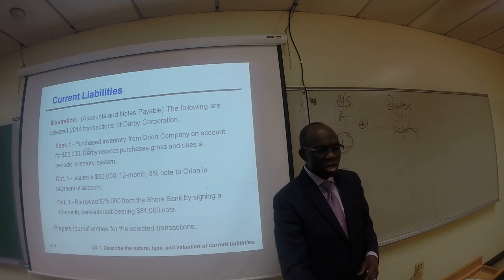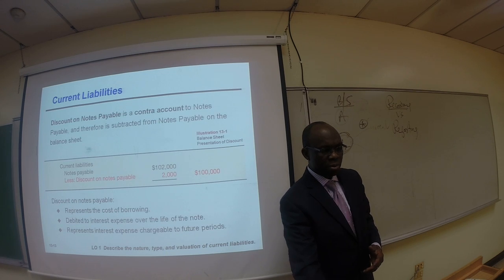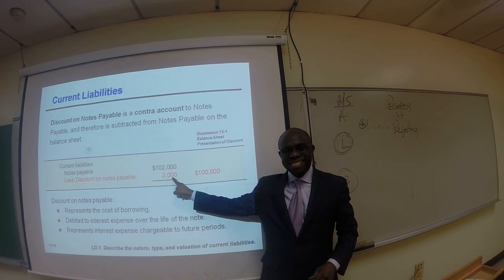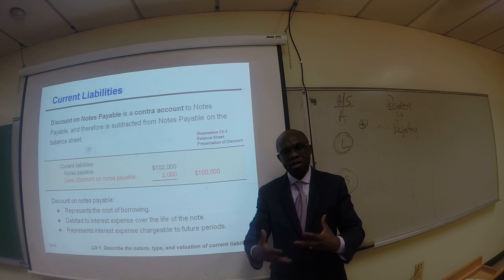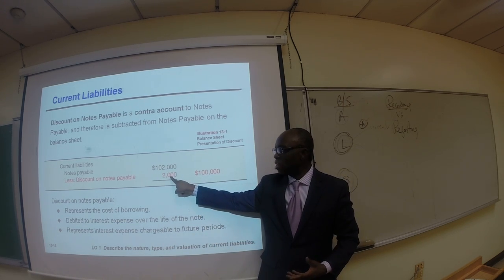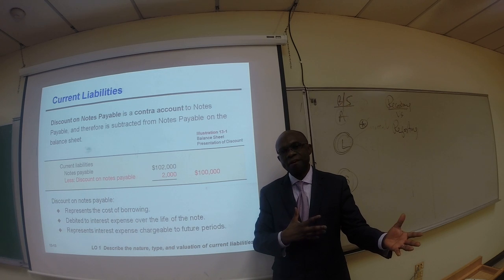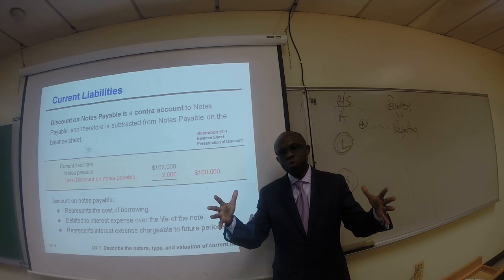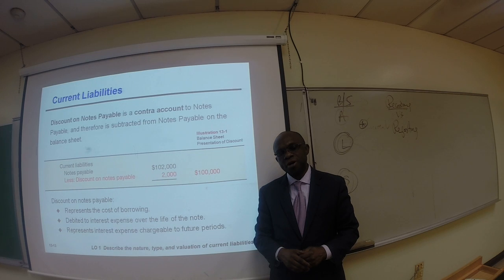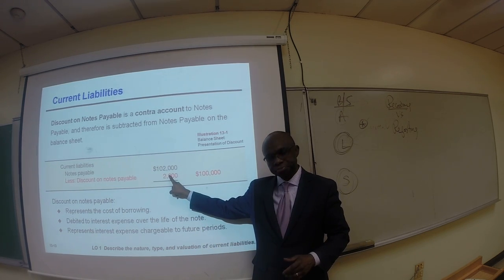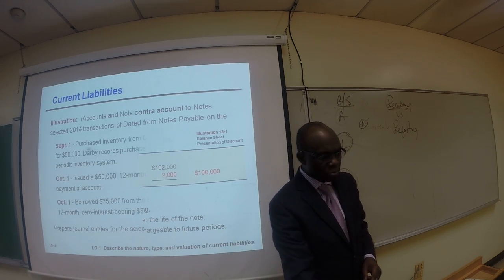As time progresses, the discount on notes payable is amortized on a monthly basis, assuming we are preparing financial statements monthly. At the end of four months, the discount on notes payable becomes zero and our notes payable balance is $102,000 — so it is now time to pay out $102,000. Over the four-month period we would have recognized $2,000 in interest expense by decreasing the discount on notes payable and recognizing the related interest expense.